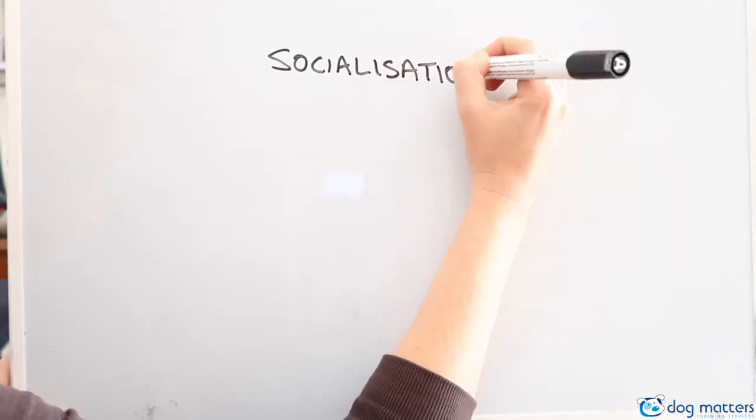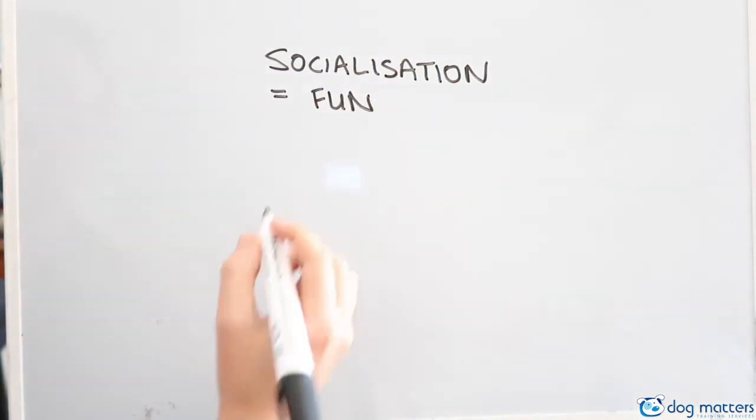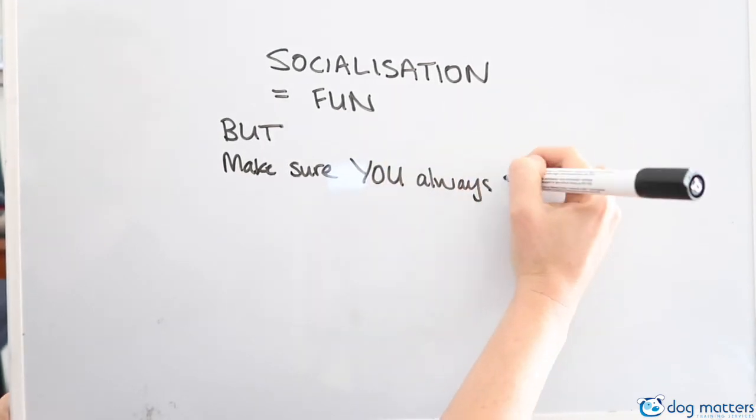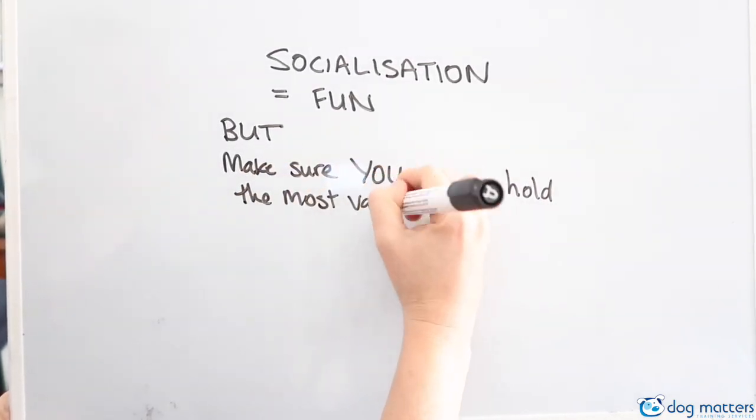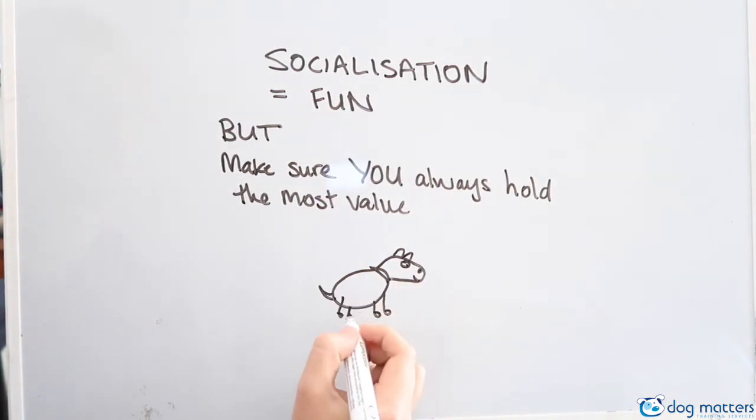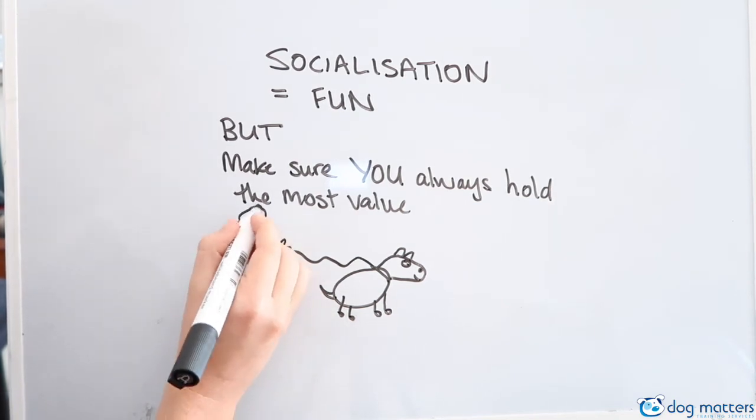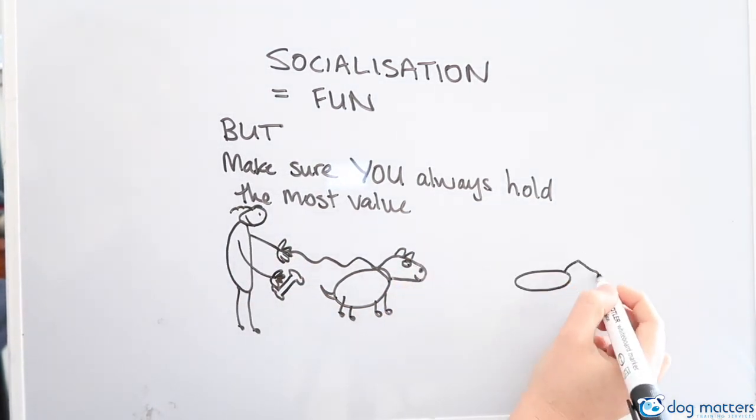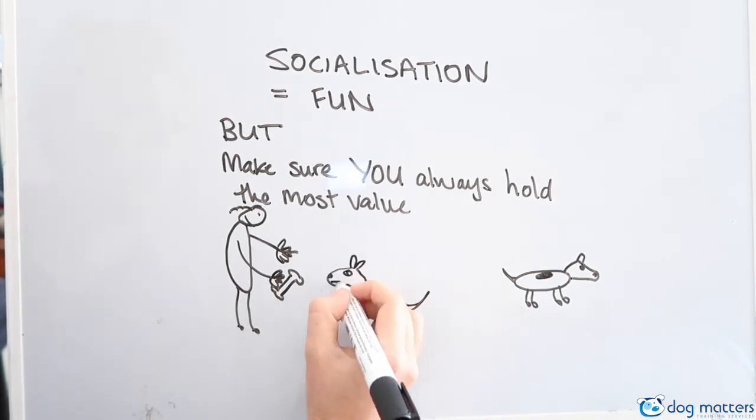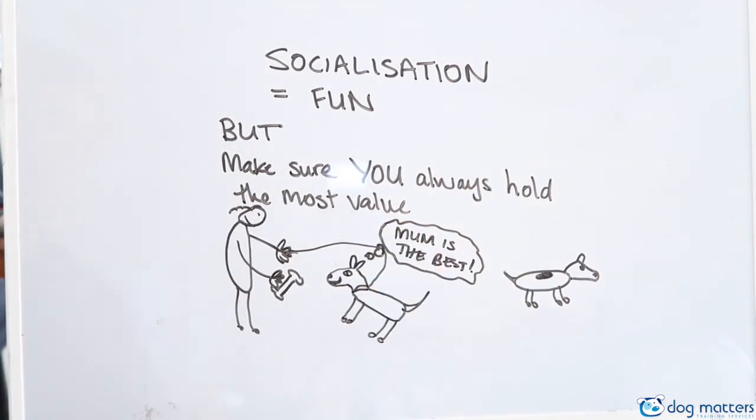Now when it comes to how to socialize correctly, socialization should always be fun. But make sure that you always hold the most value to your puppy. This will mean that you ensure that your dog will always be able to be called back to you, and you'll always be able to get your dog's attention, even around other exciting things like other dogs, because you've taught your puppy that no matter what's around, you're the best.